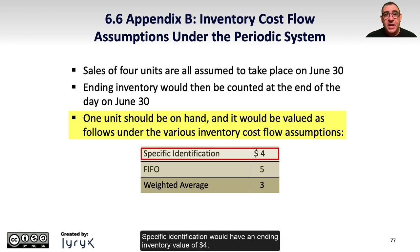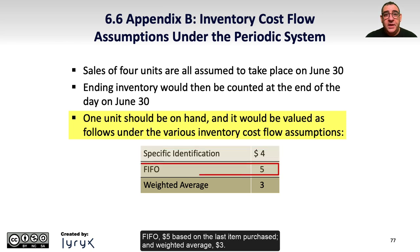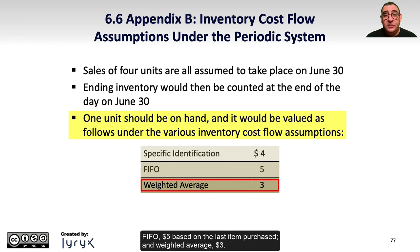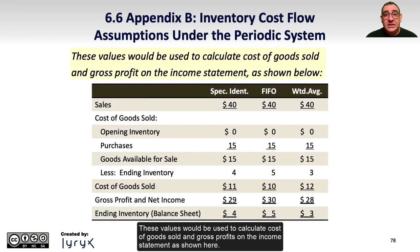One unit should be on hand, and it would be valued as follows under the various inventory cost flow assumptions. Specific identification would have an ending inventory value of $4; FIFO, $5, based on the last item purchased; and weighted average, $3. These values would be used to calculate cost of goods sold and gross profits on the income statement as shown here.